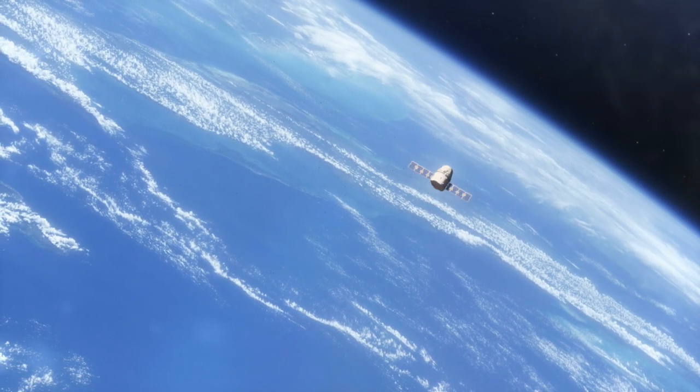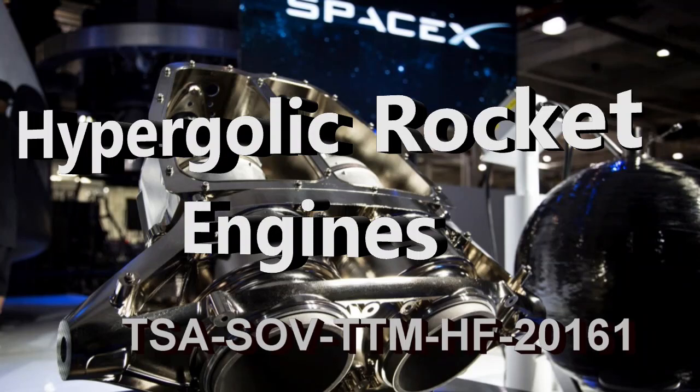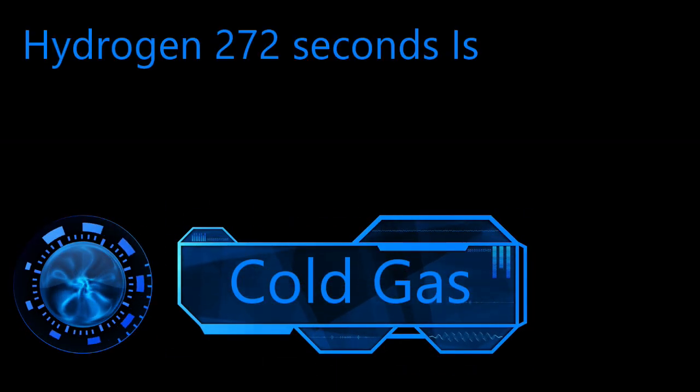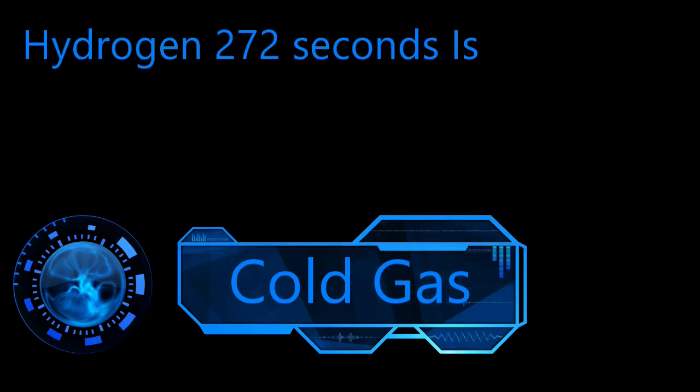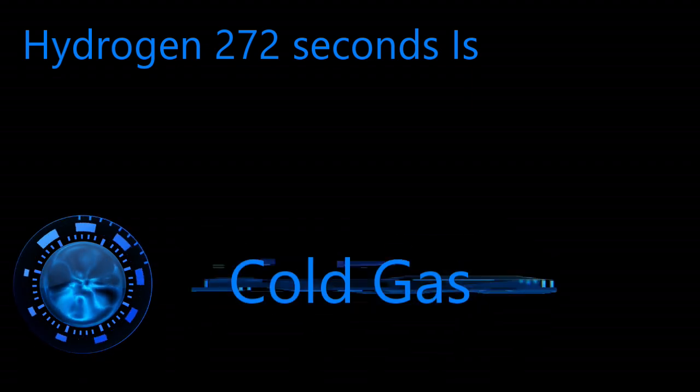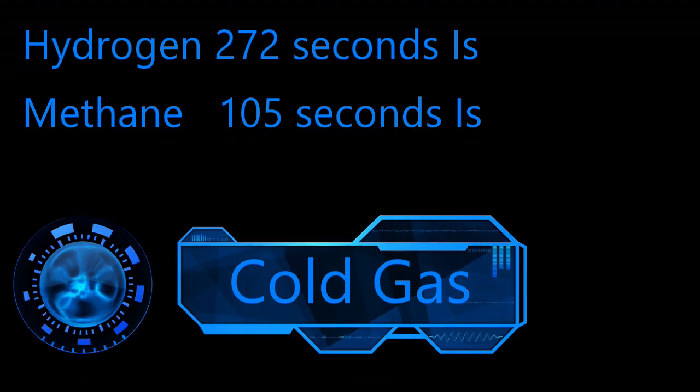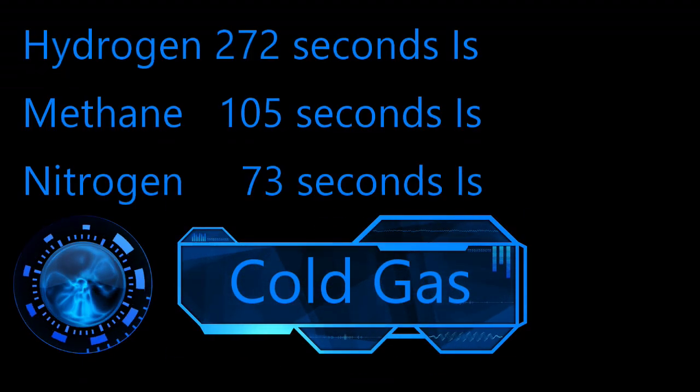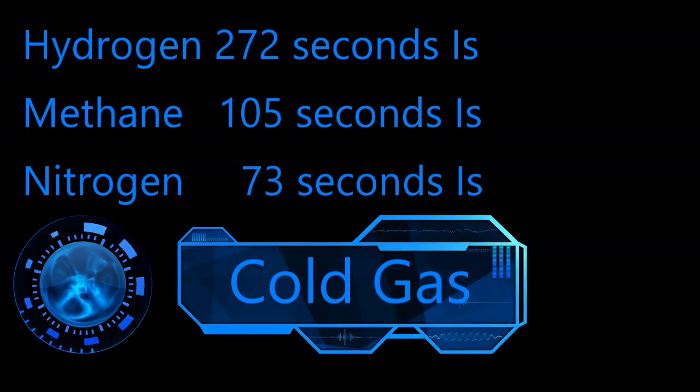Please review the course on hypergolic rocket engines to re-familiarize yourself with these systems. Now a cold gas thruster has a maximum efficiency of about 272 seconds if it uses liquefied hydrogen. This is the best. Methane is 105 seconds and nitrogen gas is only 73 seconds. But hydrogen is much harder to keep stored as it must be kept at about 20 Kelvin in one atmosphere, which is extremely cold.